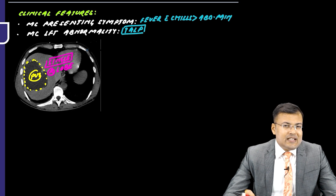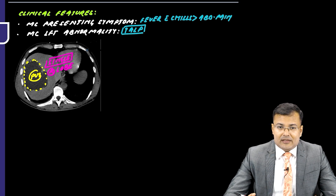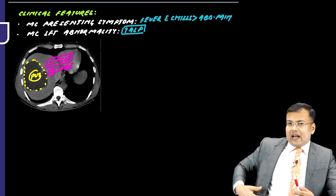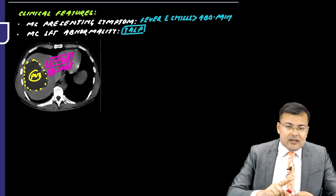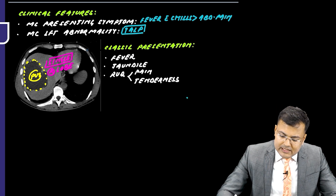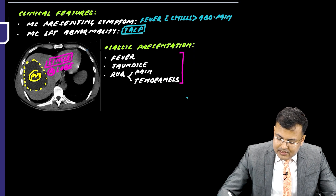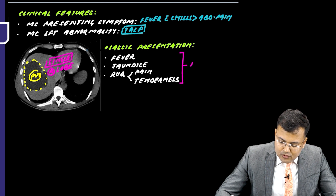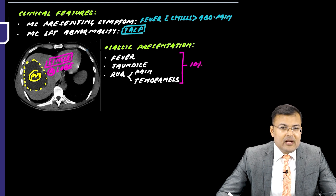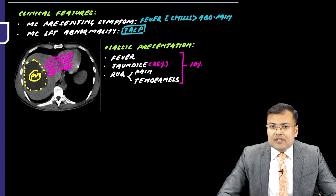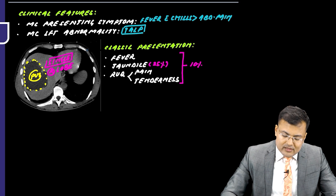The classic presentation of pyogenic liver abscess is fever, jaundice due to CBD obstruction, and right upper quadrant pain and tenderness. However, this classic presentation is seen in only 10% of patients. Jaundice alone is present in 25% of patients.